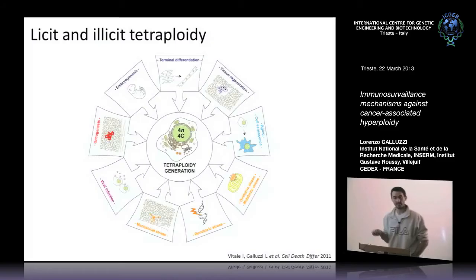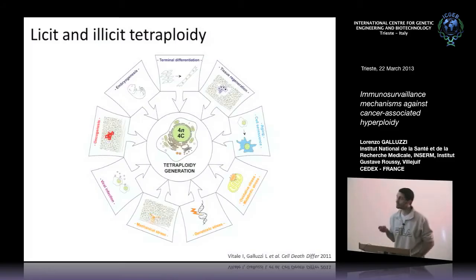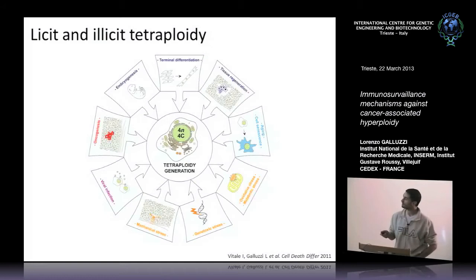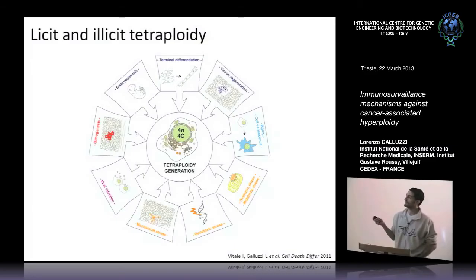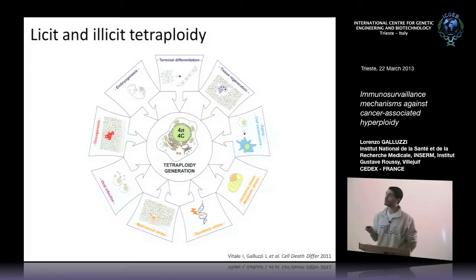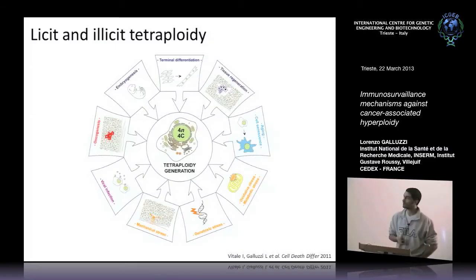Tetraploid cells are cells that contain a double amount of DNA compared to normal cells, and they contain a double set of centrioles, allowing them to replicate the DNA. They are important because they are found in several physiological and pathological settings.